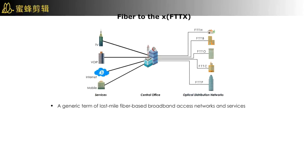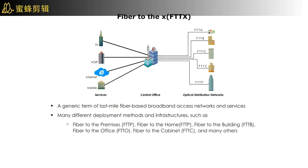Fiber-to-the-X, or FTTX, is a generic term for last mile fiber-based broadband access networks and services. There are many different deployment methods and infrastructures, or architectures, such as fiber-to-premises, fiber-to-home, fiber-to-building, fiber-to-office, and fiber-to-cabinet, and many others. Fiber-to-the-X is the key method to drive next-generation access in the local loop.